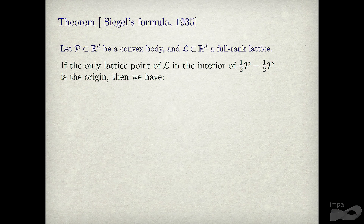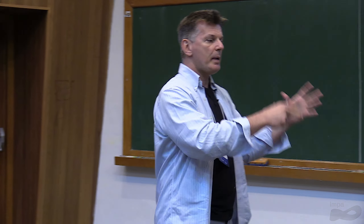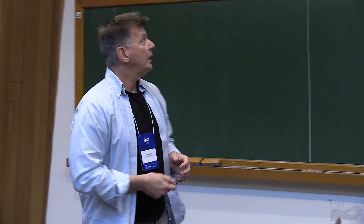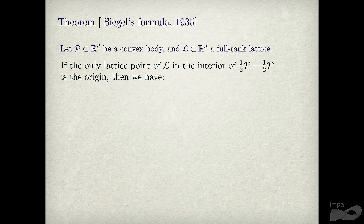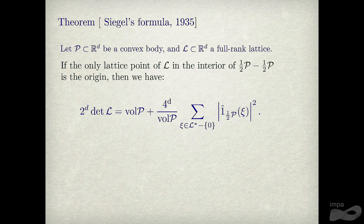Going back to Minkowski: a body is any compact subset of Euclidean space. Given a convex body and a full-rank lattice L — always assumed to be the same dimension as the ambient space — if the only lattice point of L in the interior of the difference body is the origin, this is called Minkowski symmetrization, where you dilate by one-half and shrink the body by a factor of half.